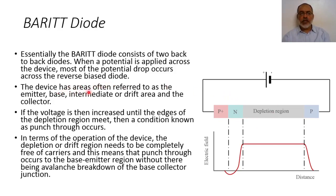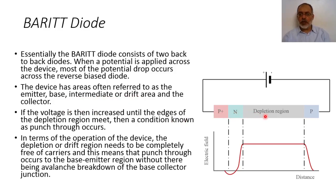The device has an area often referred to as the emitter base, an intermediate or drift area, and the collector. This is the emitter base, this is the intermediate or drift area, and this is the collector.